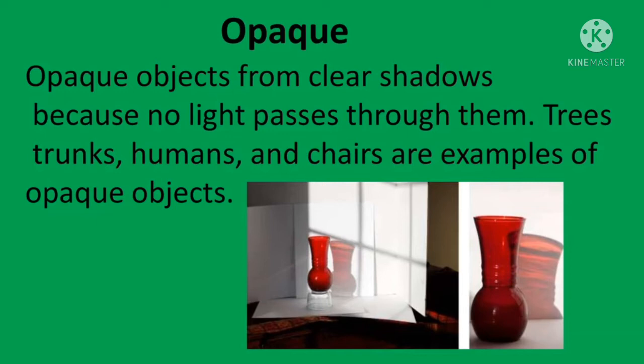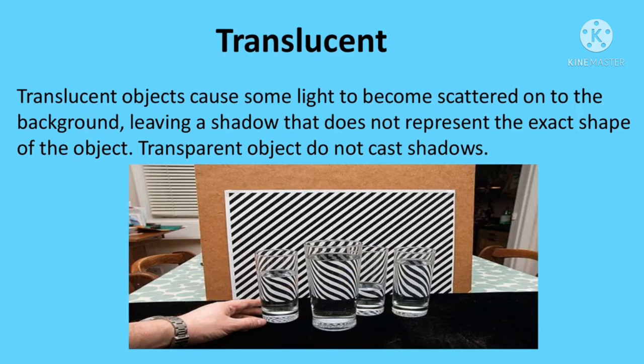When we see white objects, all colors in the spectrum are being reflected. Another example is wood, which stores collected light as thermal energy via fire. A substance is called translucent if it allows partial transmission of light. Translucent objects cause some light to become scattered onto the background, leaving a shadow that does not represent the exact shape of the object. Transparent objects do not cast shadows.